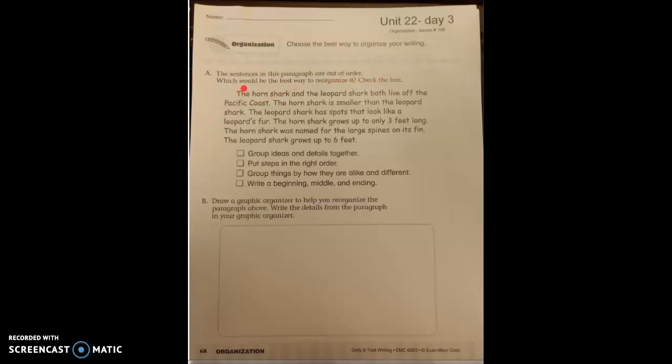So follow along as I read the paragraph below. The horn shark and the leopard shark both live off the Pacific coast. The horn shark is smaller than the leopard shark. The leopard shark has spots that look like a leopard's fur. The horn shark grows up to only 3 feet long. The horn shark was named for the large spines on its fin. The leopard shark grows up to 6 feet.